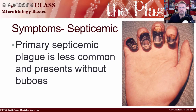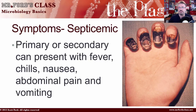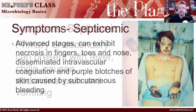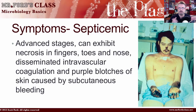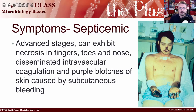Primary septicemic plague is less common and presents without buboes — you don't get the swollen lymph nodes seen in bubonic plague. Primary or secondary septicemic can present with fever, chills, nausea, abdominal pain, and vomiting. Advanced stages can exhibit necrosis in fingers, toes, and the nose — necrosis meaning dead tissue. You can see the tissue discoloration in the associated image, including discoloration of the person's nose.